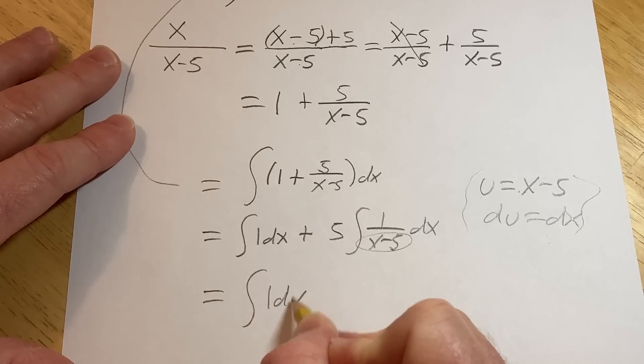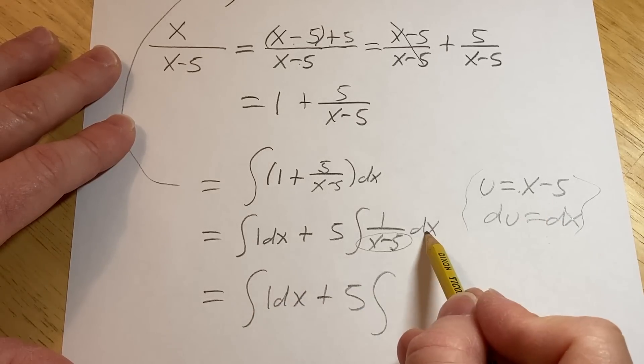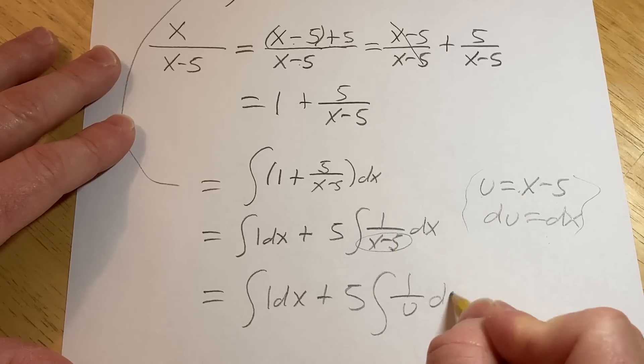So this is equal to 1dx plus 5. So dx is du, and then the bottom here is u, so this is 1 over u du.